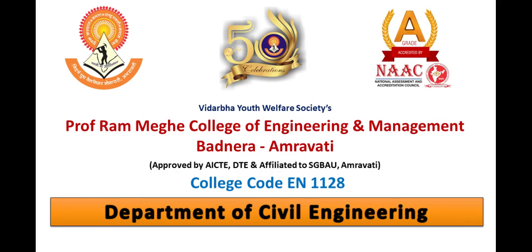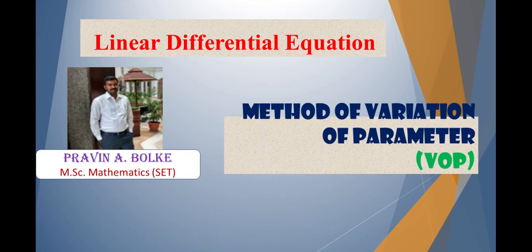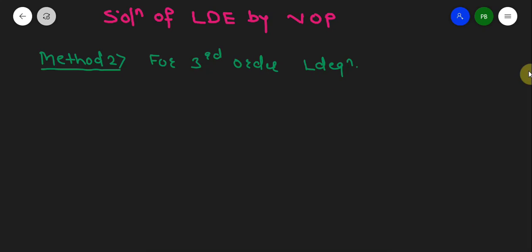In the last lecture, we discussed the evaluation of linear differential equations by the variation of parameters method and worked on examples for second order linear differential equations. In this lecture, we will continue the same topic but for third order linear differential equations — that is, Method 2. So let's start with this topic.